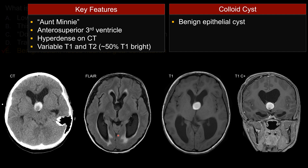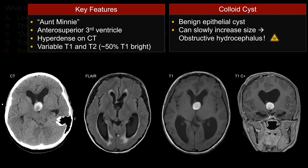It's a benign epithelial cyst. However, unlike other benign cysts such as arachnoid cysts, this lesion can grow, and that can cause obstructive hydrocephalus. There are reported cases of patients dying from acute obstruction. Here you can actually see our patient has signs of acute obstruction with periventricular interstitial edema around the ventricle on FLAIR. That is an important point to remember — that's why this patient needs urgent neurosurgical consultation.